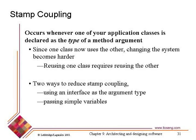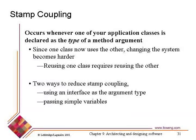Then we move on to stamp coupling. Stamp coupling is, to some extent, unavoidable. We sometimes have to pass data structures from one procedure to another, or from one component to another. The idea is that we don't want to do it unnecessarily. Stamp coupling occurs when you have a complex data structure such as a class or a struct in C that you're passing in an argument list from one routine to another. It's sometimes essential, but we want to see if there are ways to reduce it.